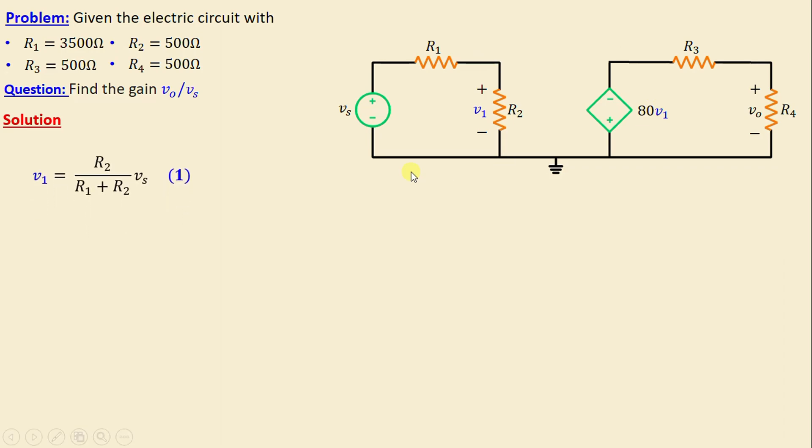here, we can write v1 = R2/(R1 + R2) × vs. I will call this equation 1.